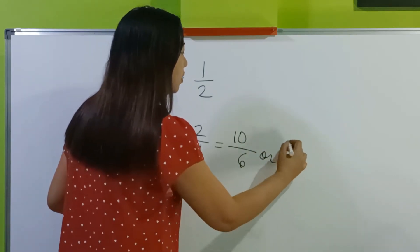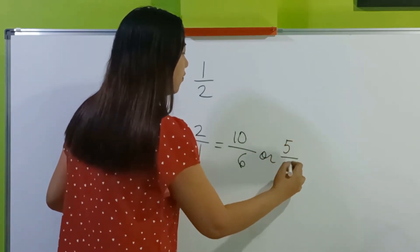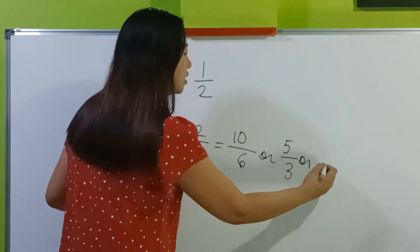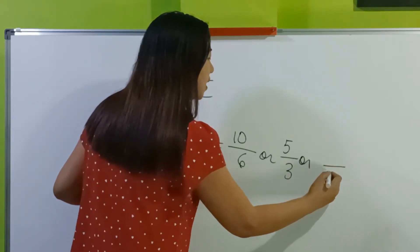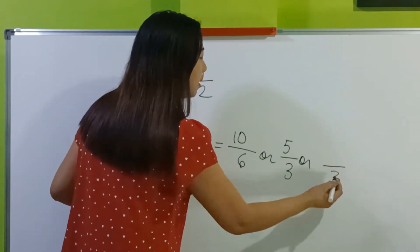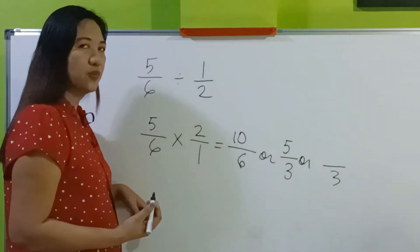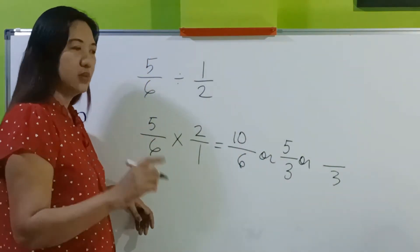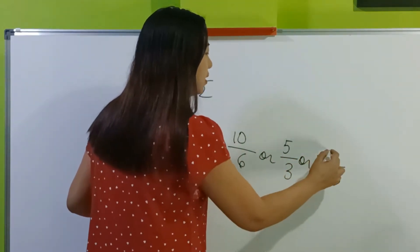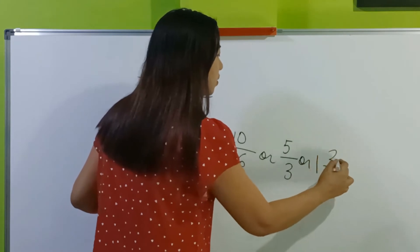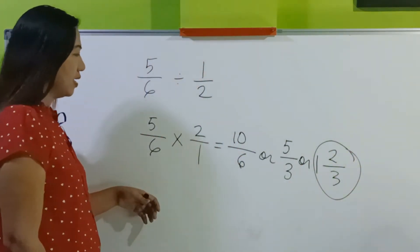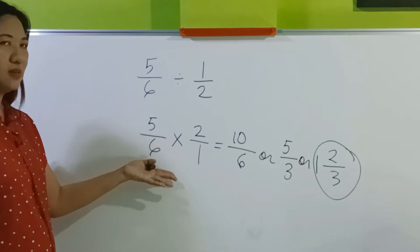This is now 5 thirds. Change it to its mixed form. Just copy 3. How many 3's are there in 5? 1, and remainder 2. So this is now the final answer. Can you cancel here?